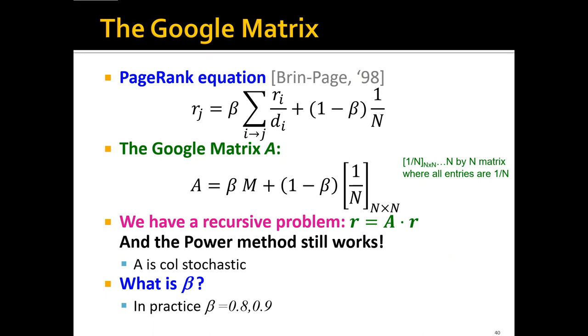But if we choose beta to be 0, then it will be random teleport everywhere. The whole graph structure will be ignored. So this option doesn't work either. In practice we often choose beta to be in the range of 0.8 to 0.9.